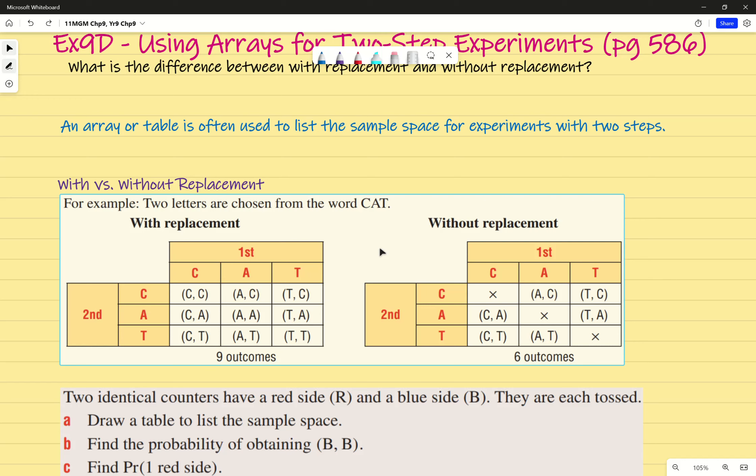When there's no replacement, is it possible to get a C and then a C again? No, you can't. You also can't get an A and an A, and you can't get a T and a T. So the probability changes in itself. Now, instead of nine outcomes, there's only six outcomes. And we just use a cross to show that it's not possible. So that's the difference between with and without replacement.